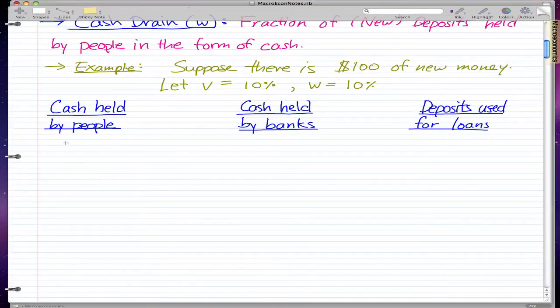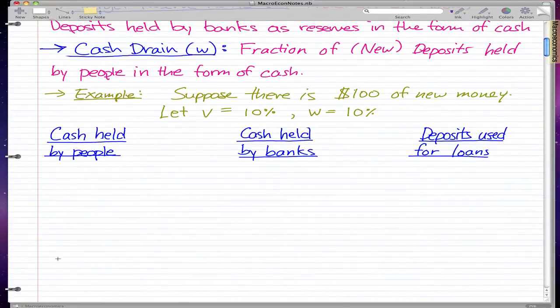The cash held by people would be W, and 10% of $100 is $10. So the first step, cash held by people is $10. Now the cash held by banks is also $10 because they're 10% too. That leaves us $80 used for loans—$100 minus the cash held by banks and the cash held by people.